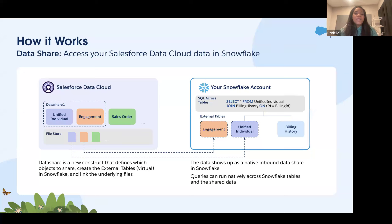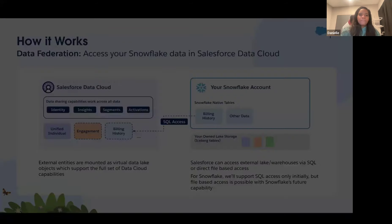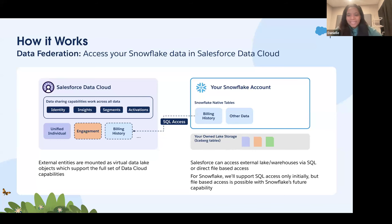Here's how it works: you connect Snowflake and Data Cloud via the Data Share Target, then select the data lake objects and data model objects you want to share into Snowflake. This is done via the creation of external or virtual tables within Snowflake, and all your Data Cloud data will appear as queryable data within Snowflake. Coming out later this month is the ability to bring your Snowflake data back into Data Cloud — not by copying data, but by sharing Snowflake tables to Data Cloud as something new called External Data Lake Objects.